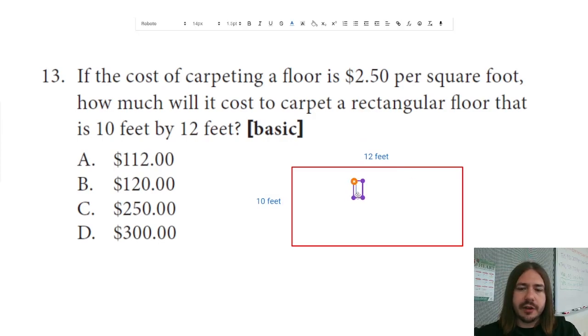The total area here is 120 square feet, and it says the cost of carpeting such a floor is $2.50 per square foot. So as long as we know how many square feet we're trying to cover here, which is 120,